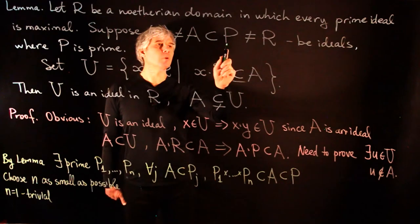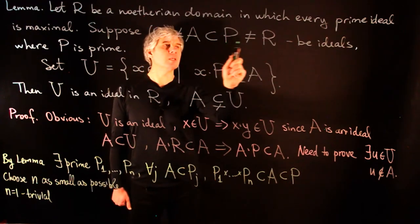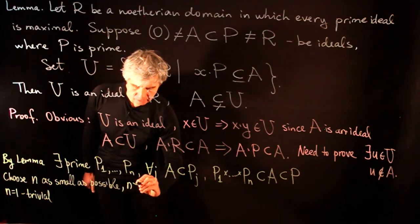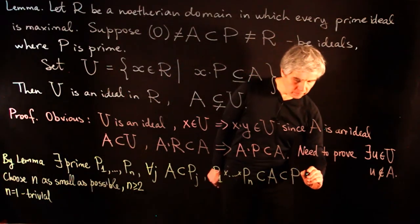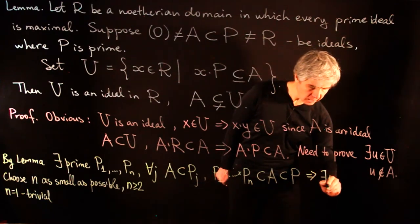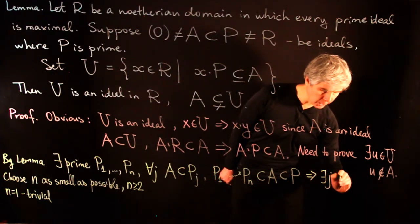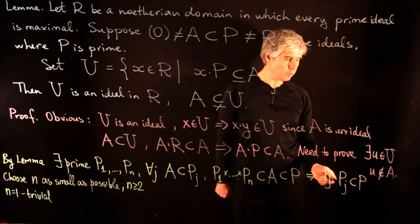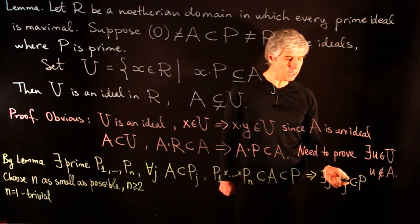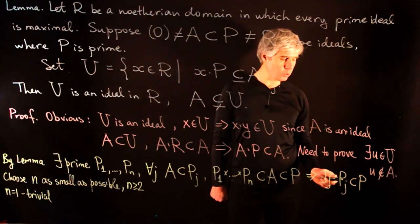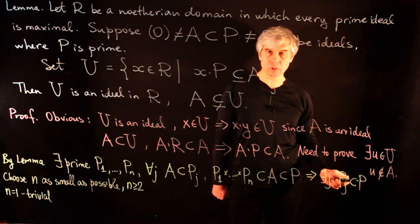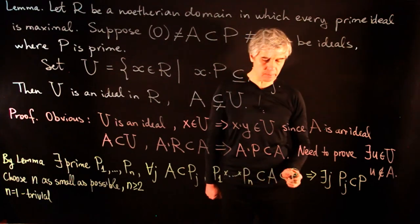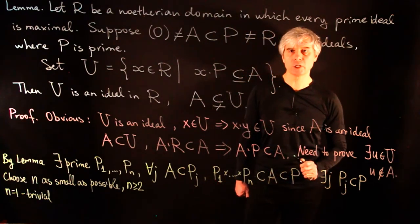So we consider the case n ≥ 2. There must exist some j such that Pⱼ ⊆ P. Otherwise, for each j we could choose an element in Pⱼ not in P, and then the product of elements not in P would be inside the prime ideal P — a contradiction.